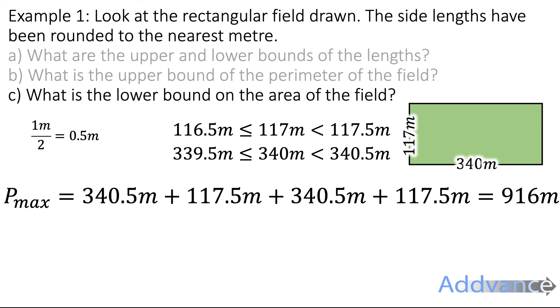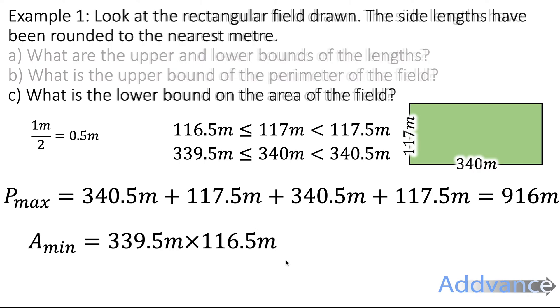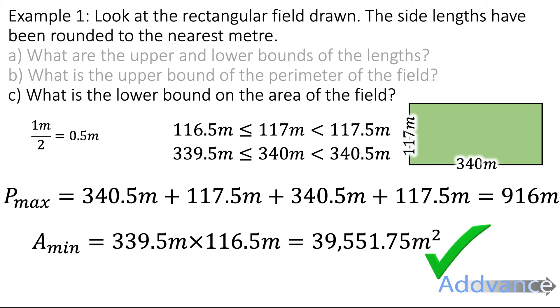Now what is the lower bound on the area of the field? The area of the field will be given by the base times the height. But we want it to be small. To get a small area, we need a small base and a small height. We multiply 339.5 times 116.5, again selecting the smallest possible lengths. Multiply those on your calculator and you should get 39,551.75 metres squared. Remember the units on the end. And we've answered all three questions.